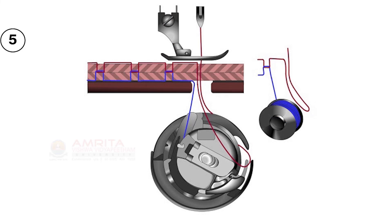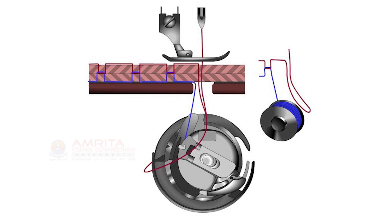A balanced stitch has the upper and lower thread locked right in the middle of the cloth. Now you have seen how a stitch forms in a sewing machine. You will also be able to identify a balanced stitch.